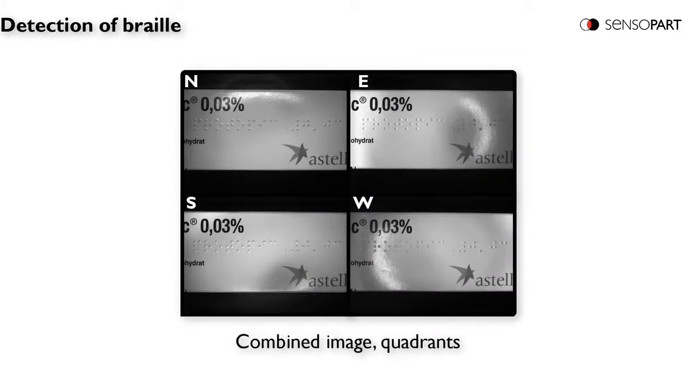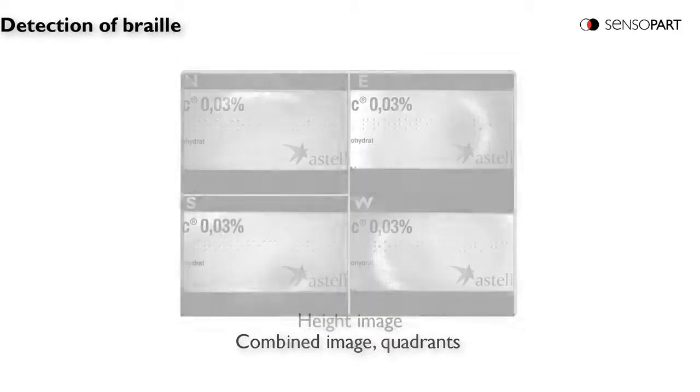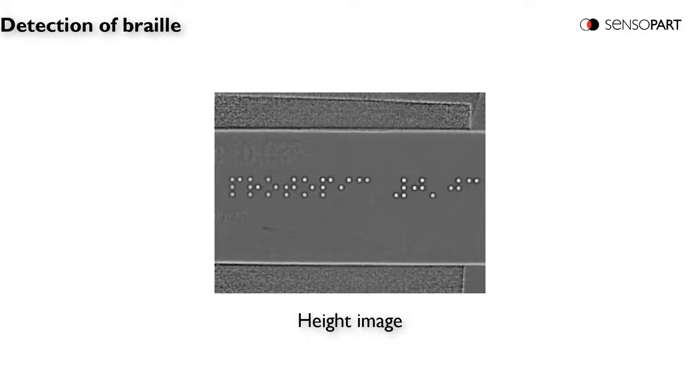The next example is Braille. You can see here the northeast, south, and west images. And here's the combined images using the height algorithm. You can also use a reflectivity algorithm.